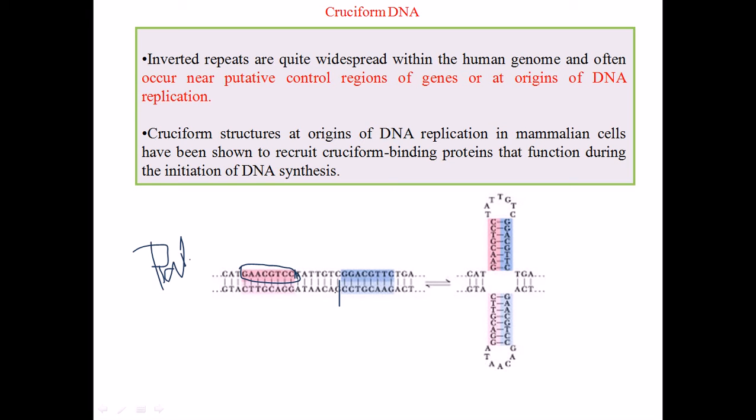So in this case we are having what is called a palindromic sequence. As you know, palindromic sequences are the inverted sequences of mirror repeats in the opposite strands, as you can see. So these are the palindromic sequences, and presence of this palindromic sequence will help this DNA to make a structure which looks like this cross. That's why it is called the cruciform DNA.